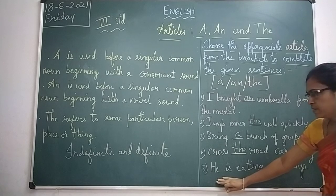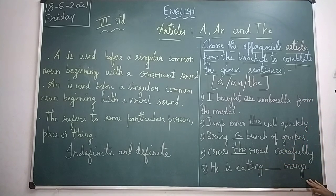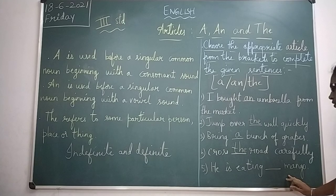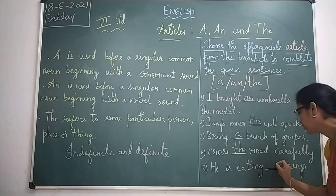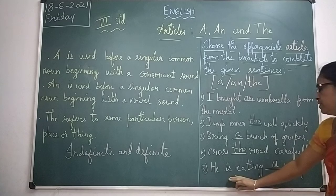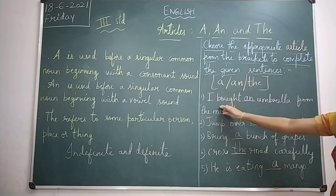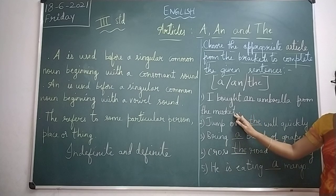The last one is: 'He is eating dash mango.' The word 'mango' — M begins with a consonant sound, so we have to write 'a' here. He is eating a mango. So the answers are: I bought an umbrella from the market; he is eating a mango.